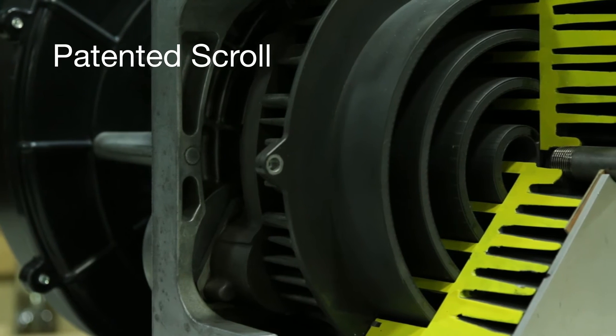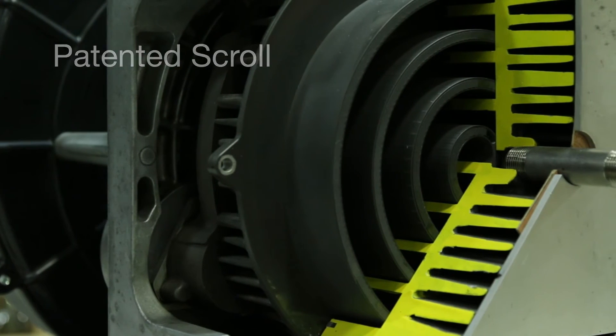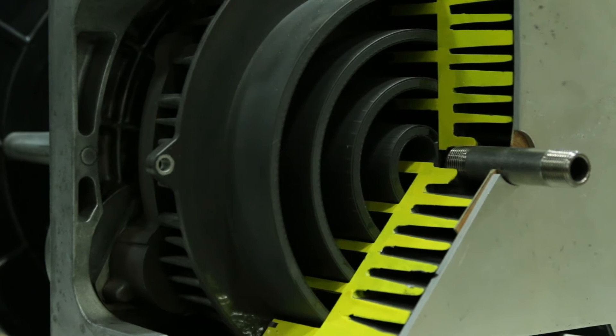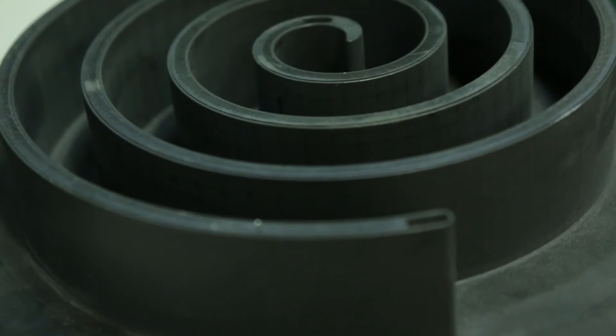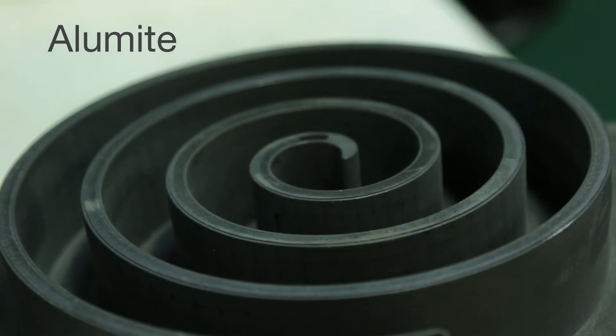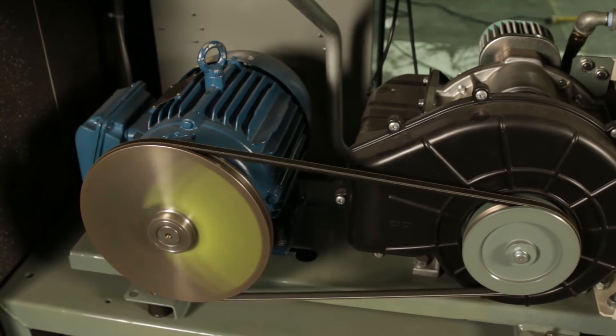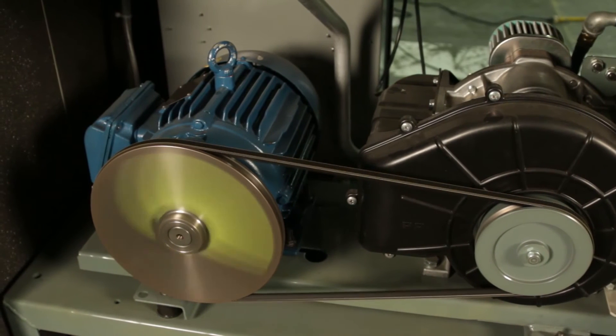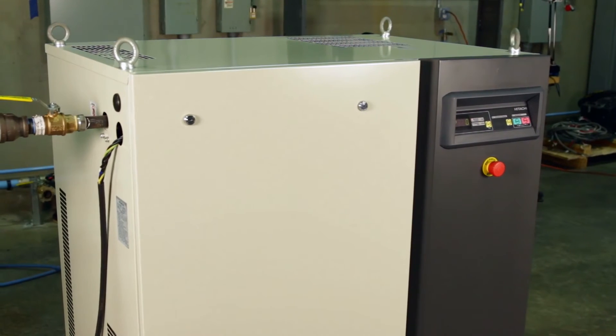A patented labyrinth scroll and tip-sealed design represent the trademark innovation found in Hitachi's industrial equipment. This unique scroll wrap is combined with a special alumite treatment that increases performance and efficiency, reduces lifecycle costs, and extends the service life of the compressor.